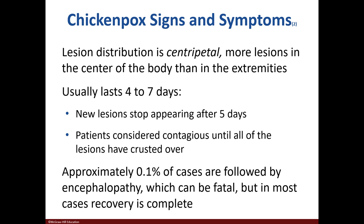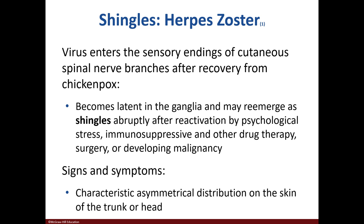Typically, more lesions are seen in the center of the body. Chickenpox can last a week with new lesions not appearing after five days. In rare instances, encephalopathy occurs and can be fatal. Shingles involves the virus associated with chickenpox. After getting over chickenpox, the virus enters nerve endings and becomes latent. Stress or immunosuppressive drugs may reactivate the virus, which then emerges along the nerve endings.